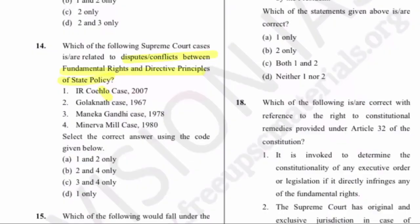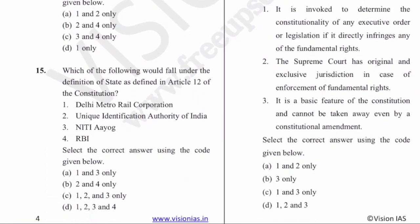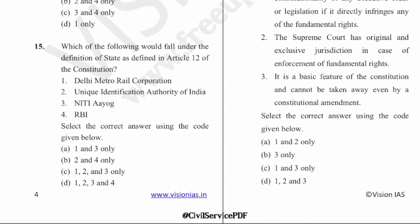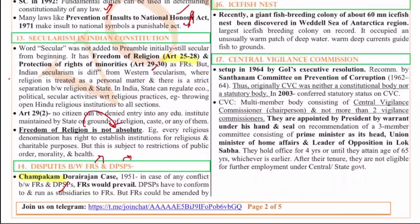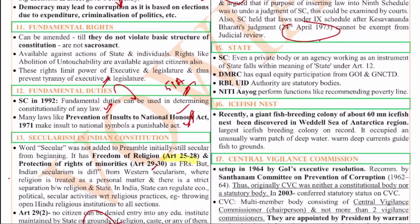The 15th question is on the definition of state under Article 12. This definition determines whether public bodies and bodies under PPP can be audited by CAG or not. The main aim of the definition of state is to include all institutions and bodies associated with the government so the government has control over them. The Supreme Court recently said that even a private body or agency working as an instrument of state falls within the meaning of state under Article 12.